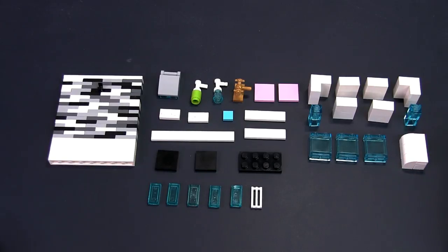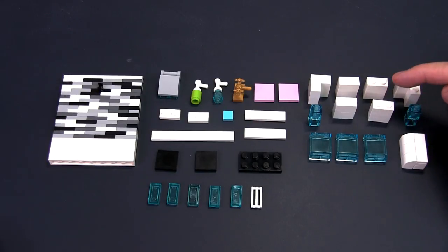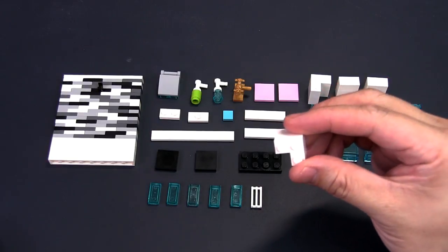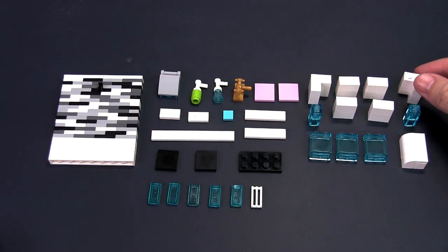You will need four 1x1 translucent bricks stacked together in two. You will need eight 1x2 white bricks stacked together in four sets of two, four 3 stud corner bricks stacked together in two sets of two.